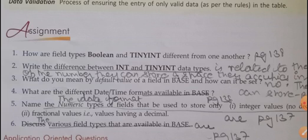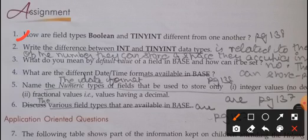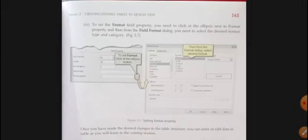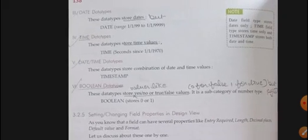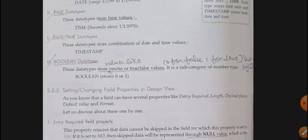Now the first question of the assignment is how are the field types Boolean and TinyInt different from one another. Let's switch over to page 138 in order to find out the answer. This is page number 138.